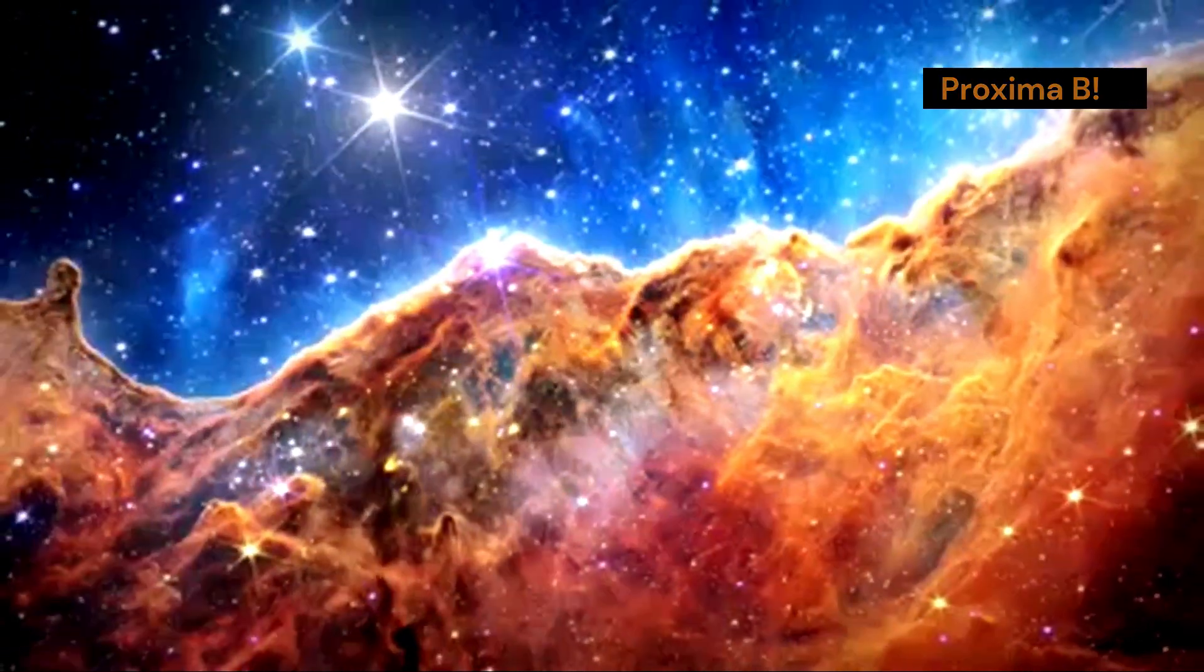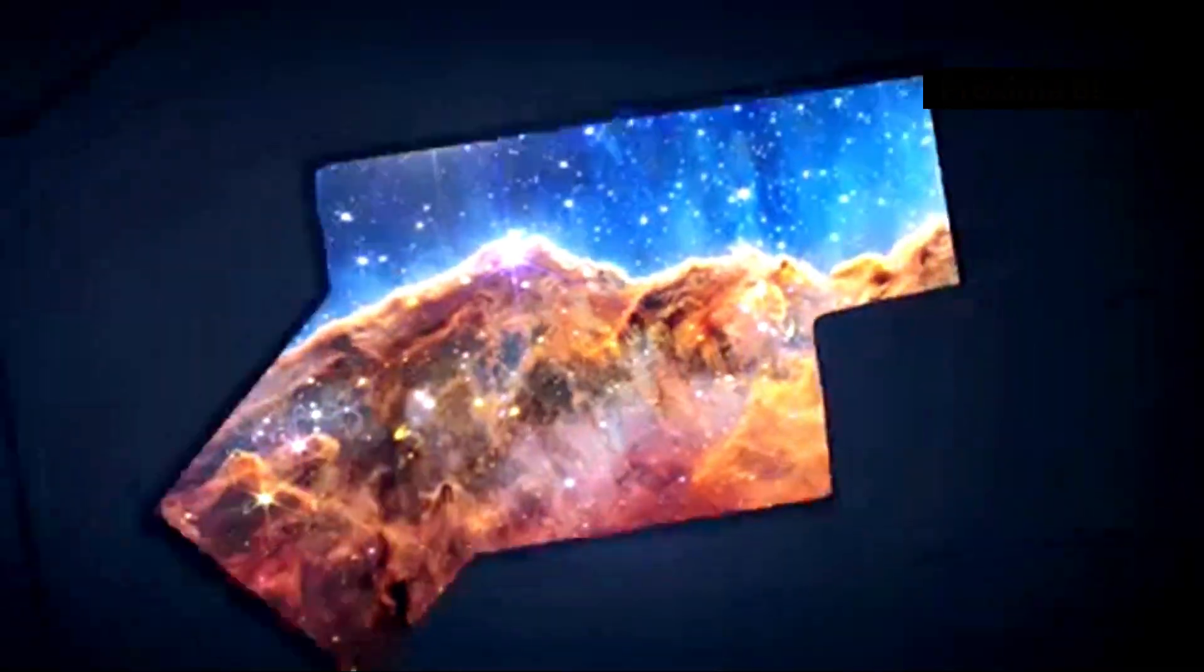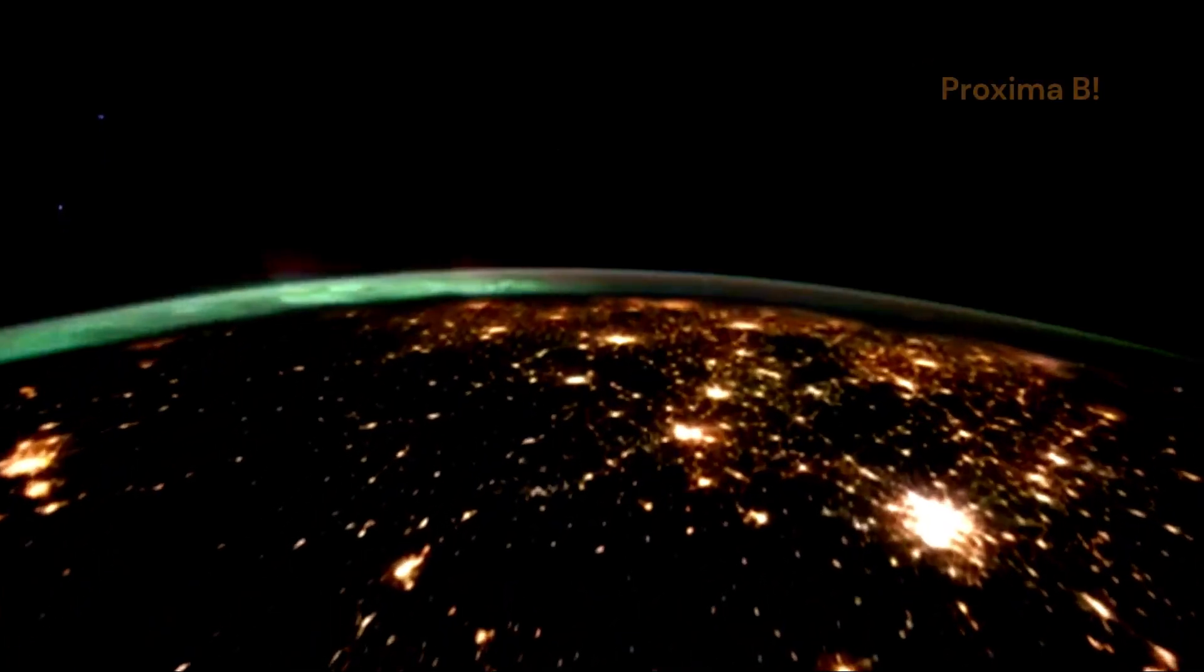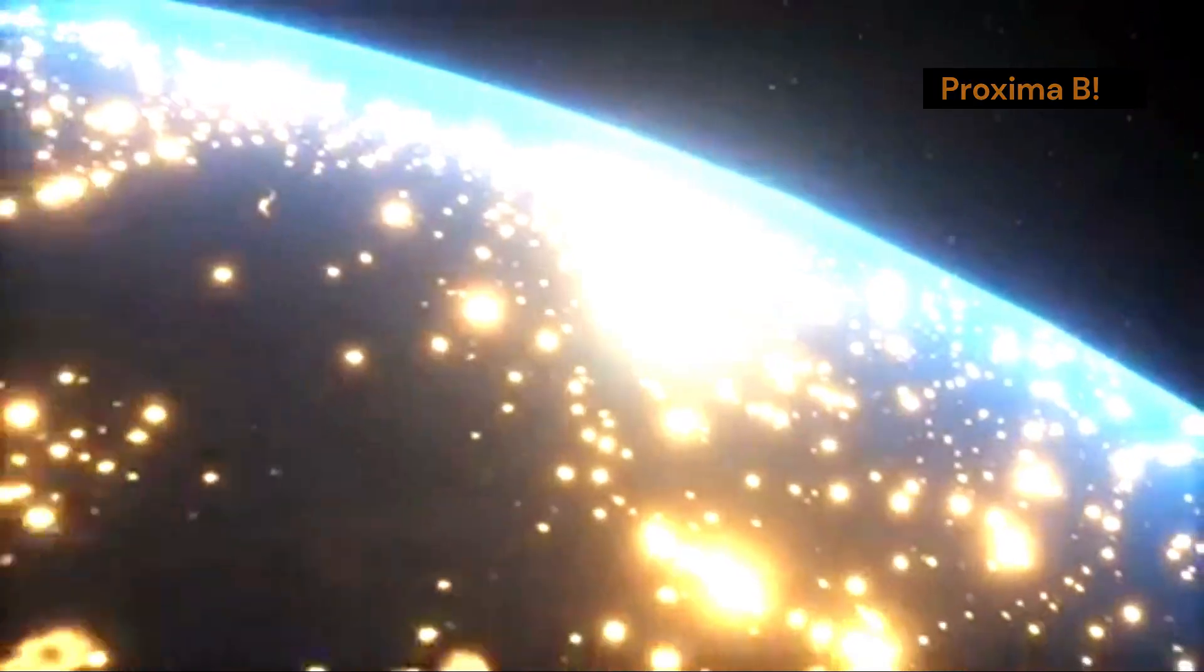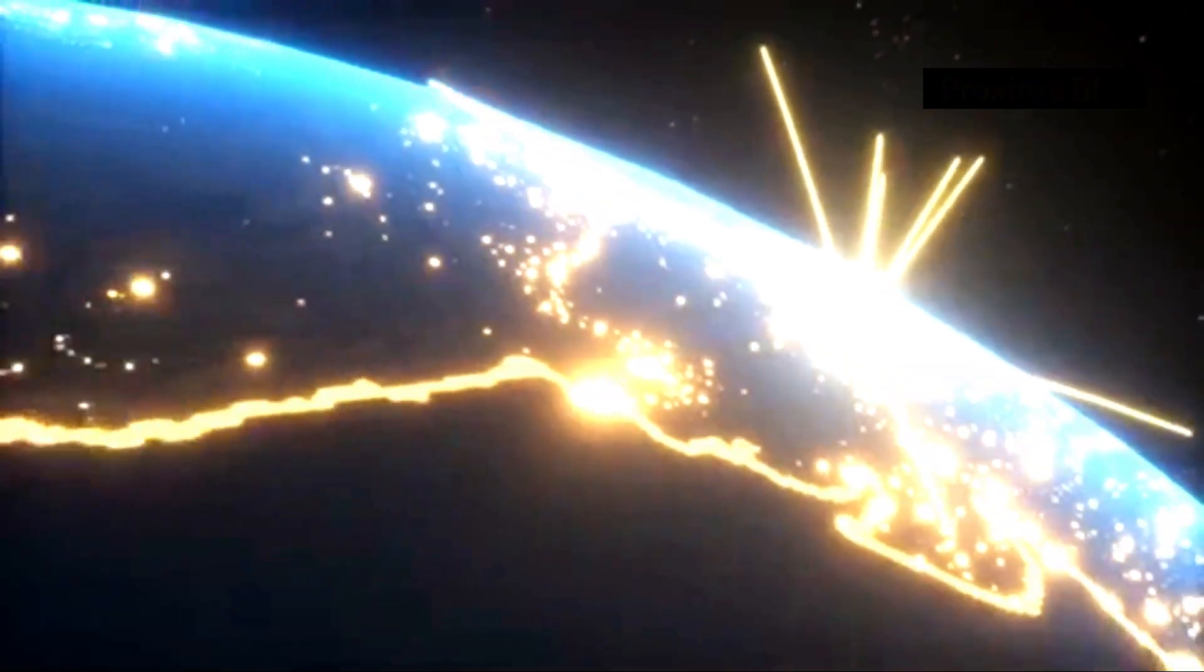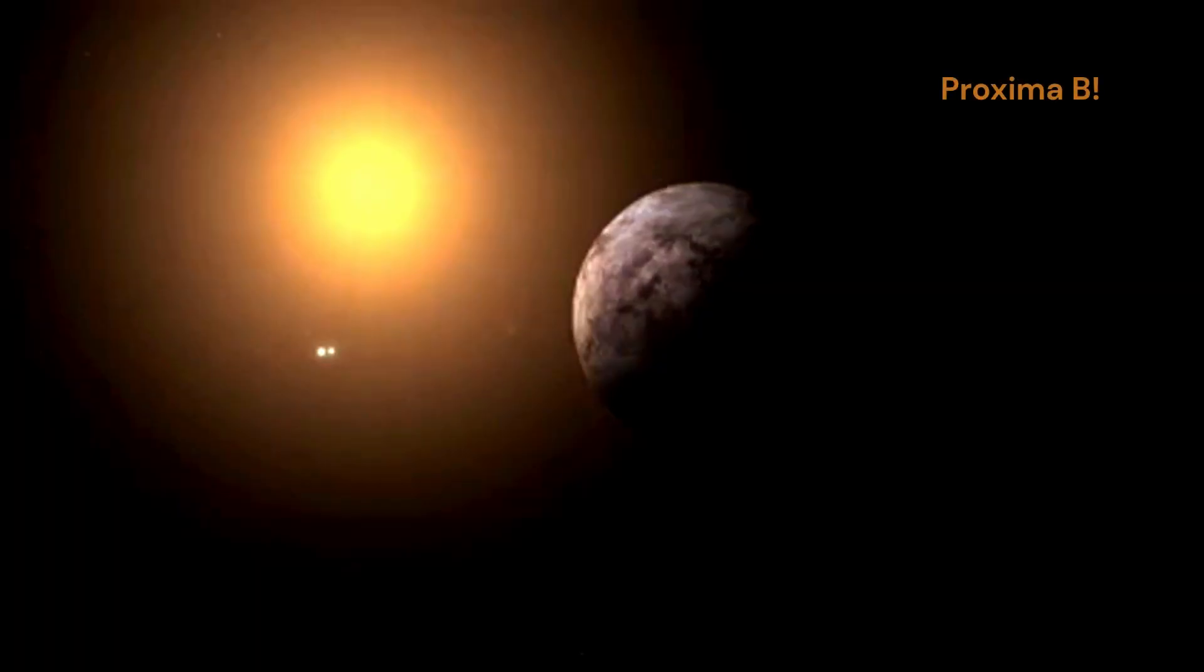The James Webb Space Telescope has offered us a glimpse into a world beyond our own. It has captured images of Proxima b, a planet orbiting the star Proxima Centauri. What makes these images so remarkable? They appear to show city lights. This is no ordinary discovery.